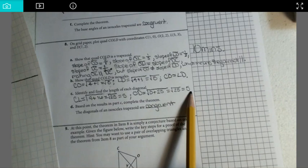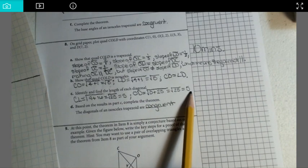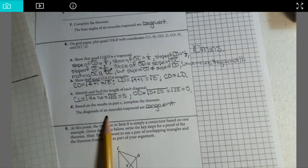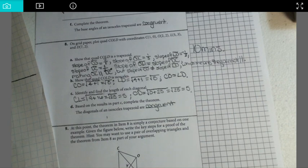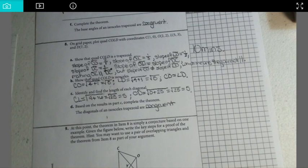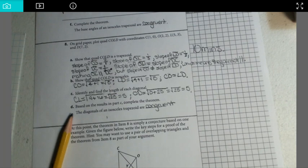So if both of the diagonals come out to be a measure of 5, I would assume that the diagonals of an isosceles trapezoid are congruent. On to the next section. Thank you.